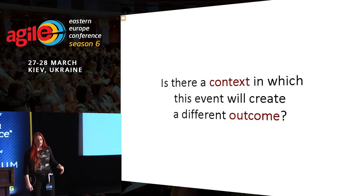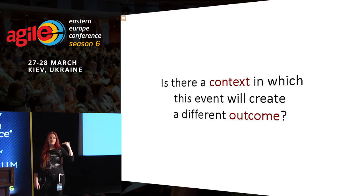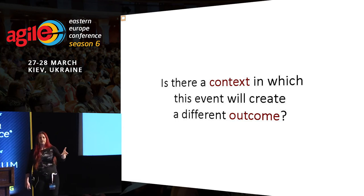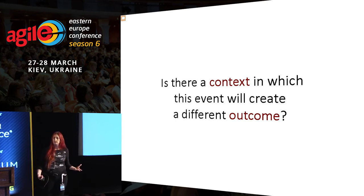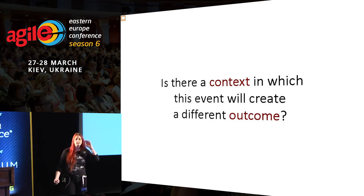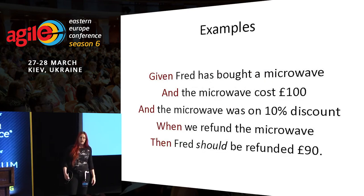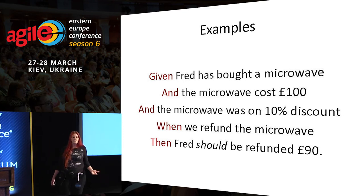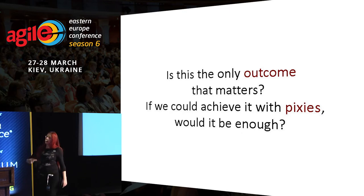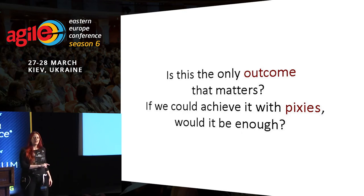I also question the outcomes — whether the outcomes should always happen in different contexts. Can anyone think of a context in which Fred does not get £100? He broke the microwave himself — right, he's not going to get his money back if he broke it himself. So that's a context. Or if it's a 10% discount, he only gets 90% back. I question whether this is the only outcome that matters.